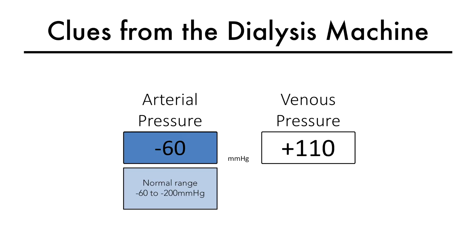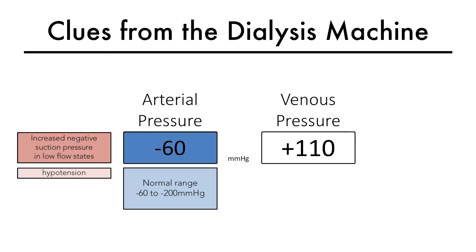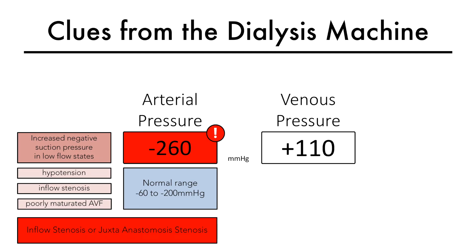The negative suction pressure is created by the rotation of the pump, which is in turn determined by the blood pump rate. In any low flow state, such as hypotension or arterial inflow stenosis, or a poorly matured AV fistula with inadequate flows, the pump will need to work that much harder to pull blood from the axis, and the negative pressure generated will be much higher. This will cause the arterial pressure to become more negative, and the arterial pressure alarm will go off, which may clue you into the possibility of an arterial inflow stenosis in the fistula.